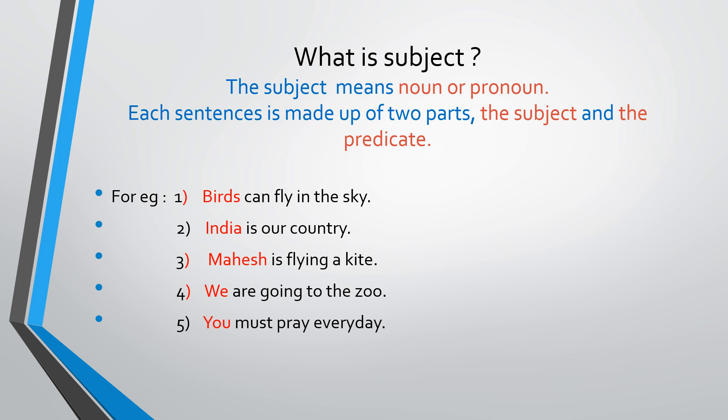'Mahesh is flying a kite' — Mahesh is the subject. 'We are going to the zoo' — We is the subject. 'You must pray every day' — You is the subject. So, 'we' and 'you' are pronoun subjects, and Birds, India, Mahesh are all names — a bird name, a country name, a boy's name. These are the subjects. Understood? Subject means any noun or pronoun. In a sentence it comes at the beginning, and that is known as a subject.